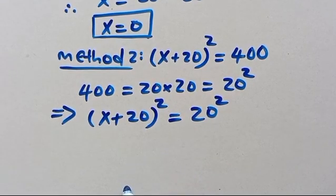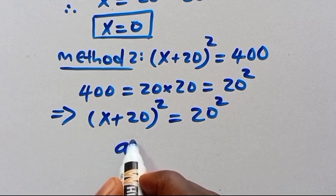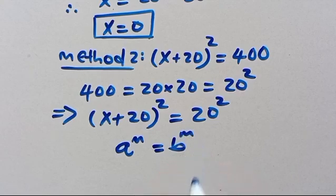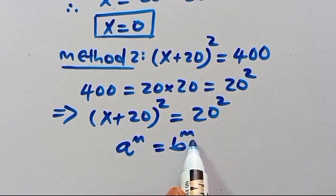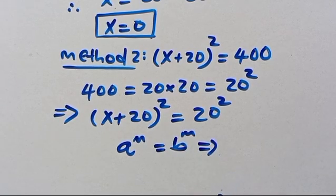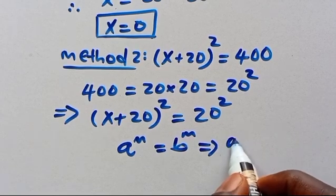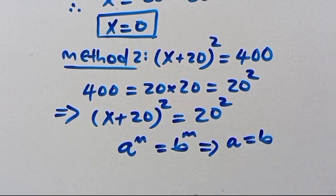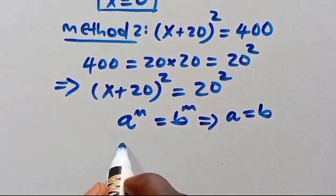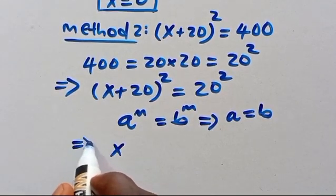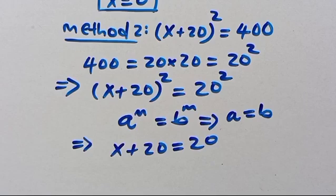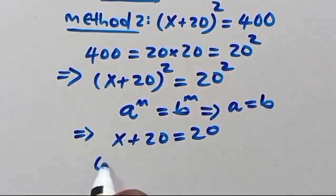From the law of indices, when we have a^n = b^n with the same power but different bases, we can equate the bases: a = b. Applying this here, we have x+20 = 20. Collecting like terms...